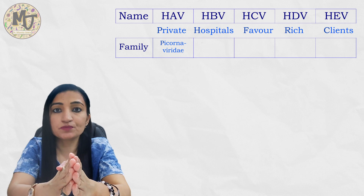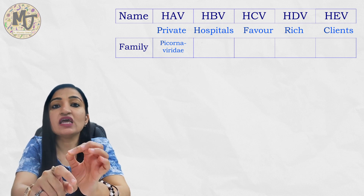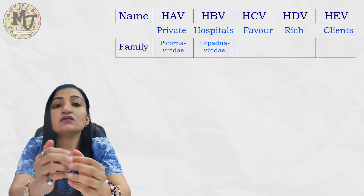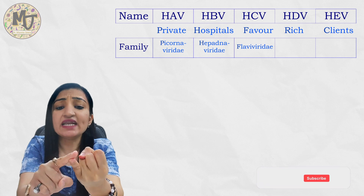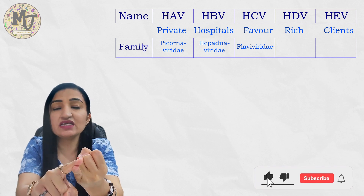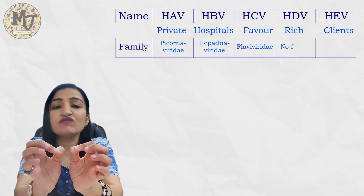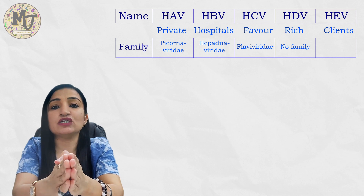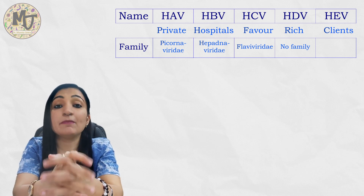HAV belongs to the Picornaviridae family, and the older name of Hepatitis A virus is Enterovirus 72. H of 'Hospitals' stands for Hepadnaviridae family. F of 'Favor' should serve as a reminder for the Flaviviridae family, so Hepatitis C virus (HCV) is a flavivirus. R of 'Rich' does not refer to any family name because HDV is a defective virus.